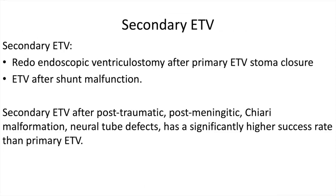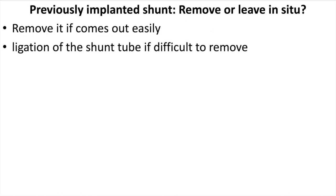Secondary ETV refers to redo ETV after failed ETV or ETV done after shunt failure. The result of secondary ETV after post-traumatic, post-meningitis, Chiari malformation, and neural tube defect has a significantly higher success rate than primary ETV. Regarding shunt removal: remove it if it comes out easily; ligate the shunt tube if it is difficult to remove.